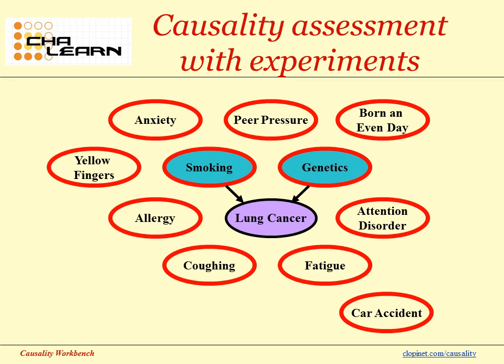If we conducted a planned experiment by systematically setting the variables in the graph to given values and measuring their effect on lung cancer, this would be equivalent to disconnecting all the nodes except smoking and genetics from lung cancer. This is why experiments are the gold standard for determining causal relationships — all that's needed in a well-designed experiment is to assess the significance of the dependencies between potential causes and the outcome.